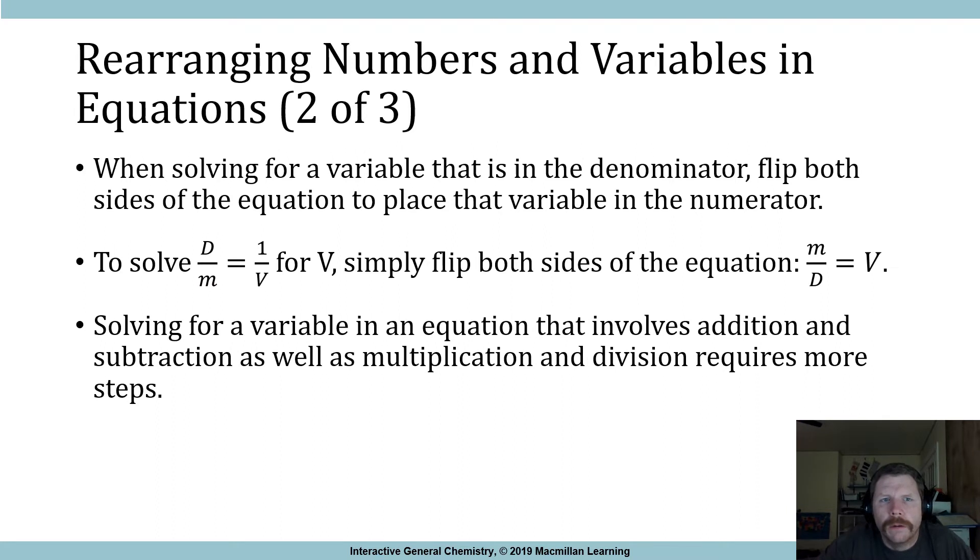Okay, rearranging numbers and variables in equations, part 2 of 3. When solving for a variable that is in the denominator, flip both sides of the equation so that that variable is in the numerator. To solve d over m is equal to 1 over v for v, simply flip both sides of the equation. What that's going to do is give us this equation: m over d is equal to v, because v over 1, that 1 simply is kind of ignored basically.